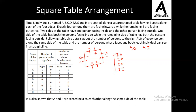The following table gives detail about the number of persons to the right or left of every person along the same side of the table, and the number of persons whose face or back each individual can see in a straight line. Let us interpret this table. A has one person to his right, none to his left, and A is not able to see the face or back of any individual.